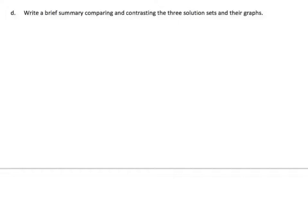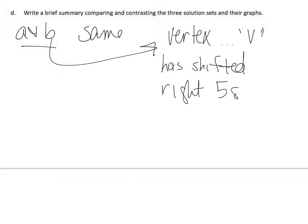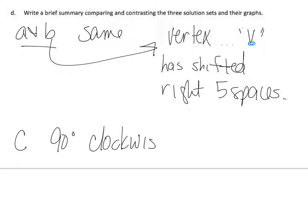Write a brief summary comparing and contrasting the three solution sets and their graphs. A and B are the same, except the vertex — the V — has shifted right 5 spaces. With C, we actually have a 90-degree clockwise rotation about the origin.